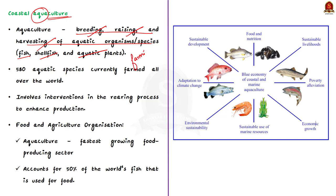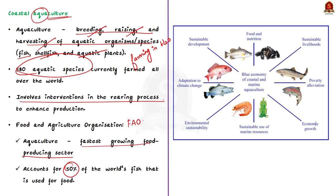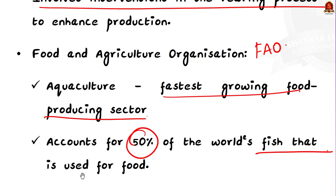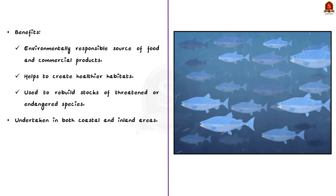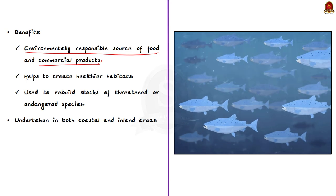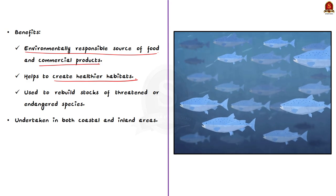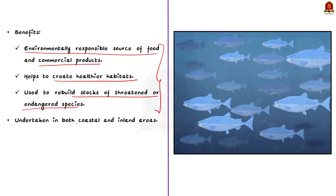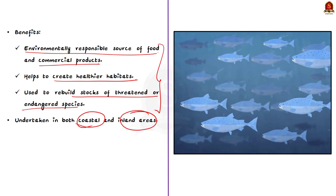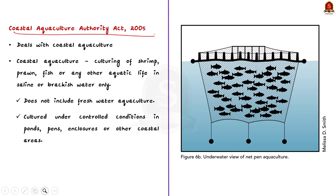Around 580 aquatic species are currently farmed all over the world. Such farming involves interventions in the rearing process to enhance production. According to the Food and Agriculture Organization, aquaculture is probably the fastest growing food producing sector and it accounts for 50% of the world's fish used for food. Aquaculture can be undertaken in both coastal areas and inland areas.